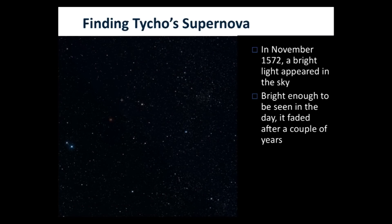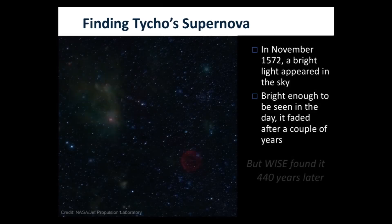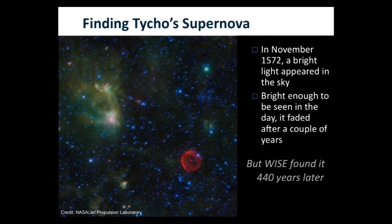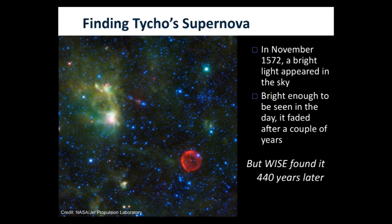But as WISE scanned the universe, the scientists asked: could we see any remnant, any evidence of the Tycho Brahe supernova? Well, in fact, we can. This red object in the lower right is the thermal footprint we can still see today of Tycho's supernova. So Tycho was telling us the truth.